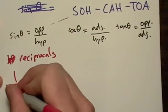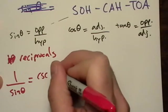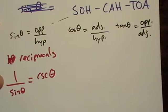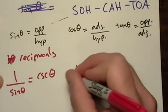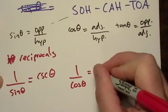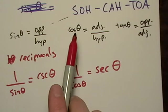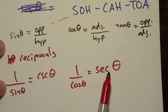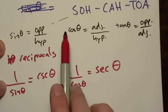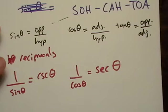One over sine theta equals cosecant theta — that's CSC. One over cosine equals secant theta. The way I remember those: cosine is C-O-S and secant is S-E-C — the first letter and the last letter are just switched around, so that one is easy to memorize.